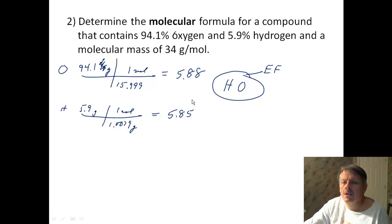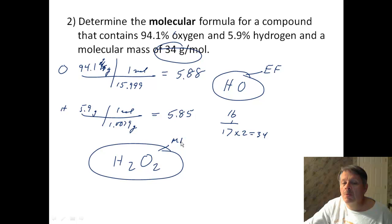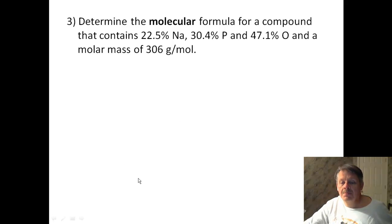Now, how much does this weigh? Well, oxygen weighs 16 and hydrogen weighs 1. That's 17. But I want it to hit me 34. So I have to multiply everything by 2 to get 34. So that means what I really need is I really need H2O2, and that is my molecular formula, because this thing here weighs 34 grams. All right. Let's try number three, a little bit longer.